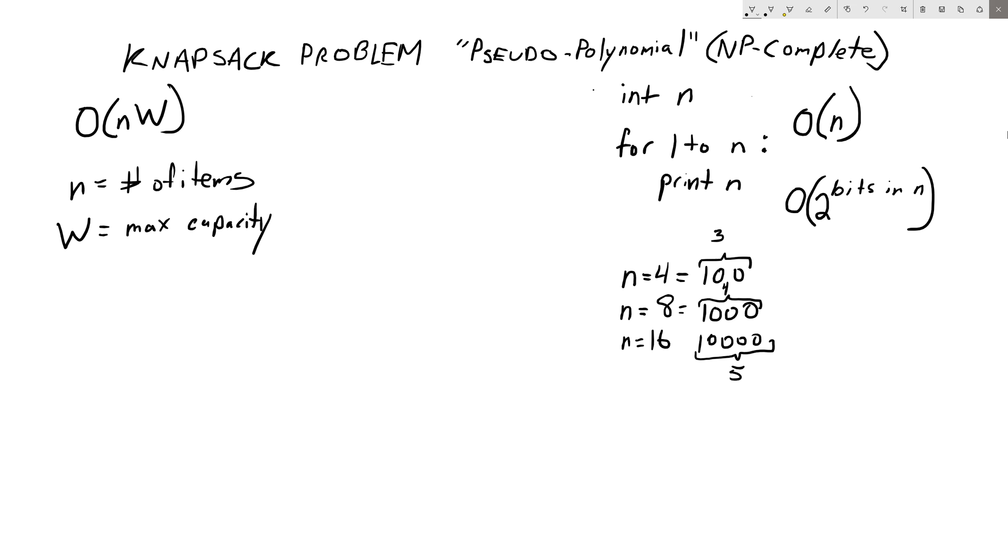Now, if instead our algorithm didn't take in an integer N, if it took in an array N, right? So, now we have some, our input value is an array of a list of items. And this list is of size N. Well, now, if we say for 1 to N, print A times i, or whatever this value is, or just print N.